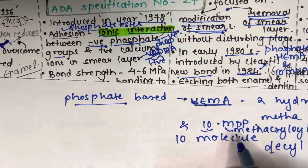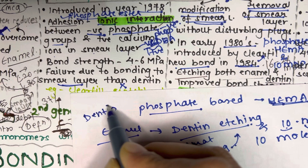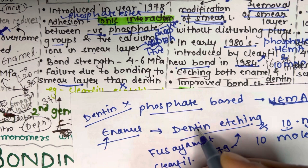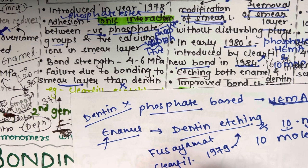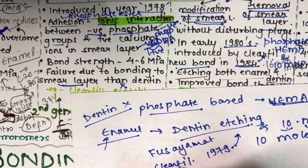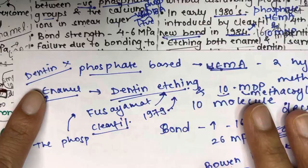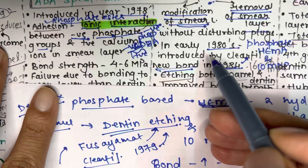In the previous two generations, dentine was not etched because it was considered harmful to the tooth, so only enamel etching was done. In the third generation, the philosophy of dentine etching was introduced. The philosophy of phosphoric acid dentine etching was introduced by Fusuyama et al. in 1979, and the only third generation bonding agent that followed this philosophy was Clearfil New Bond.